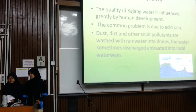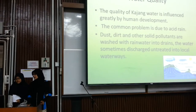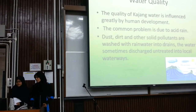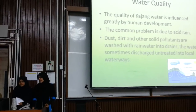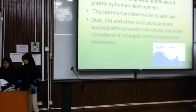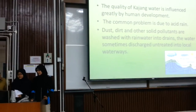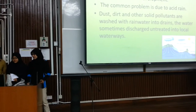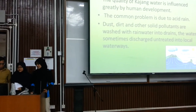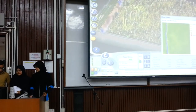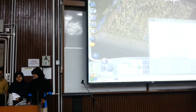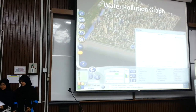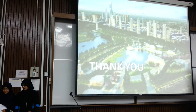The next one is water quality. The water quality of Kajang is influenced greatly by human development. The common problems are due to acid rain, dust, dirt, and other solid pollutants being washed into water sources. This is the water pollution data and graph. That's all. Thank you.